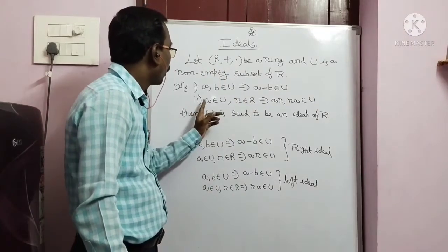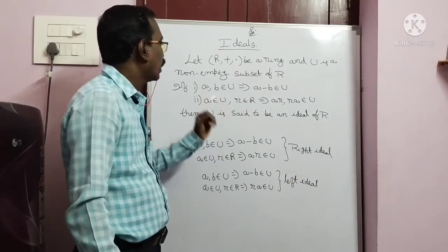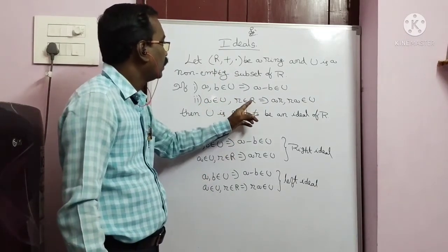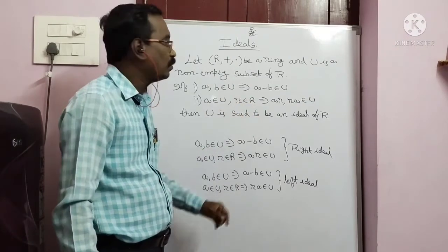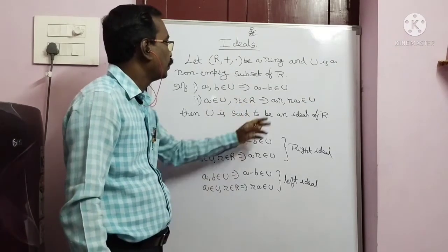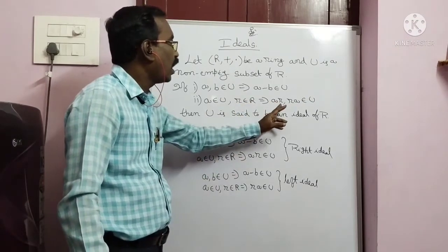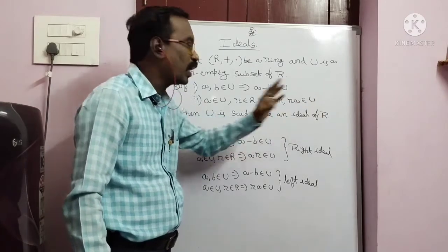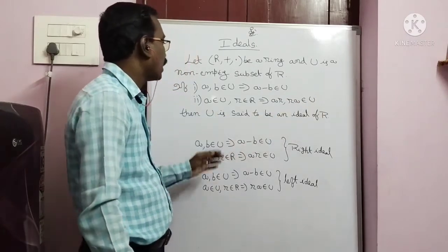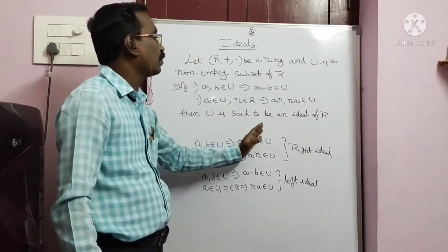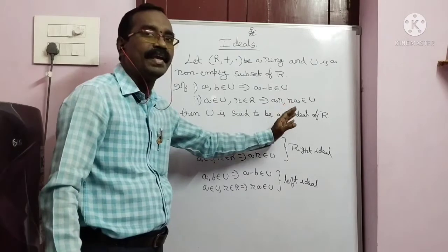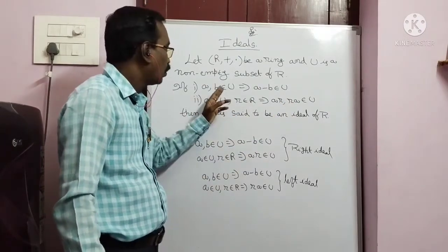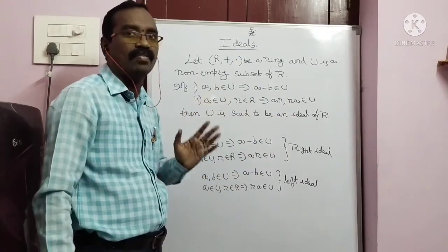Second point: U is a non-empty subset. A, R, R — A belongs to U.